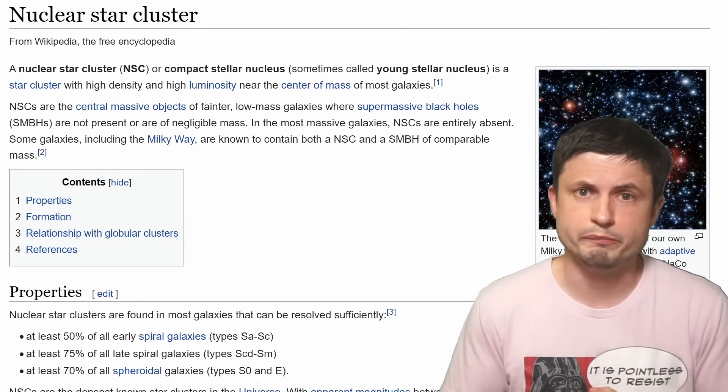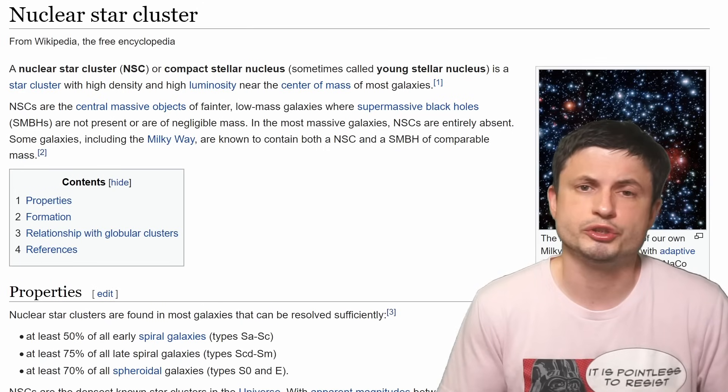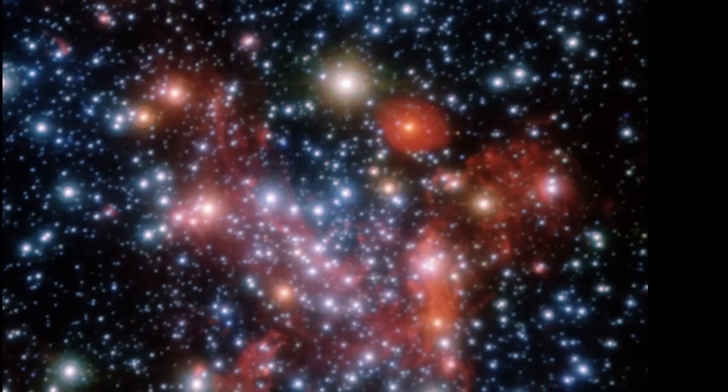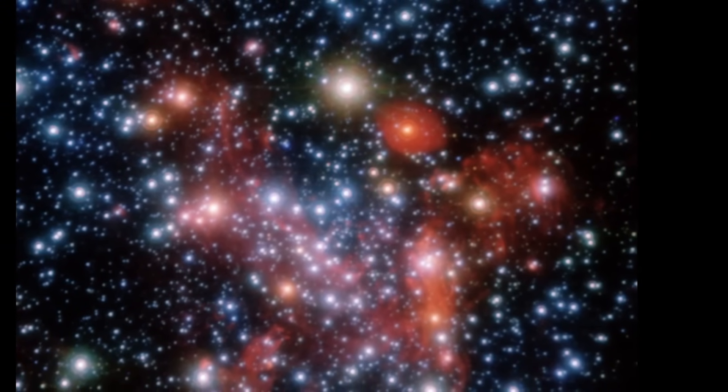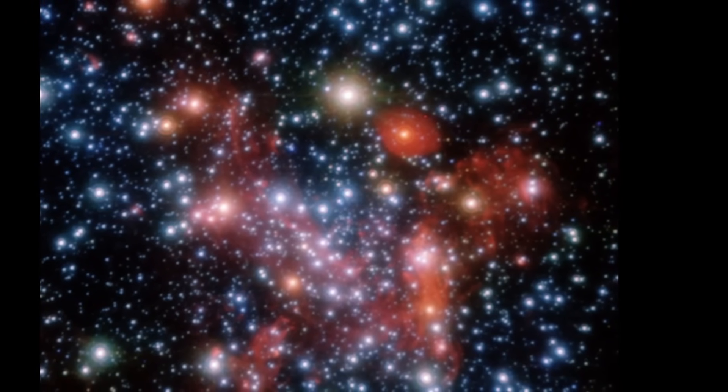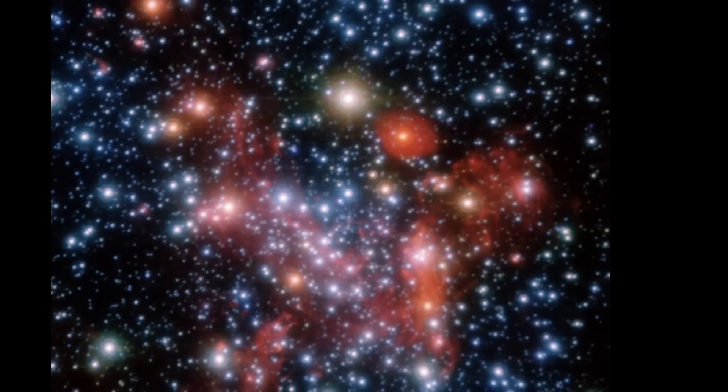With all of this also based on theories involving what's known as a nuclear star cluster. NSC for short. Here's one inside our own galaxy, the Milky Way. And these are usually star clusters with very high density and really high luminosity, normally located relatively close to the center of the galaxy. With a lot of these objects resembling a typical globular cluster, and you can learn more about these in some of the previous videos right there or in the description.